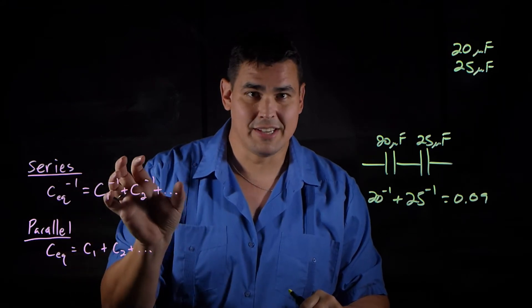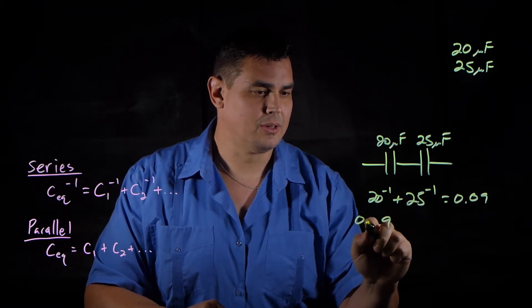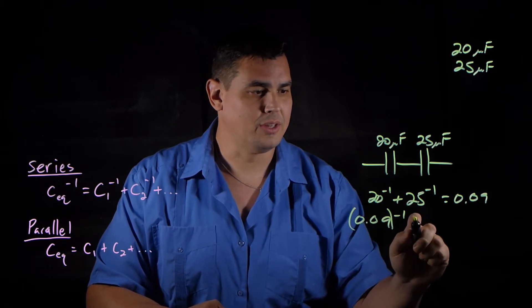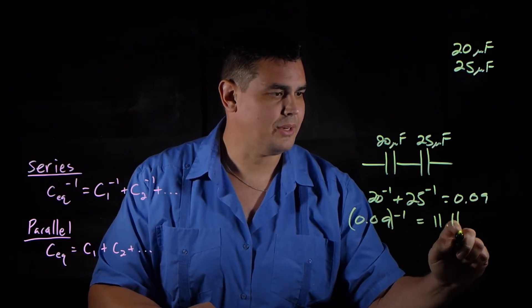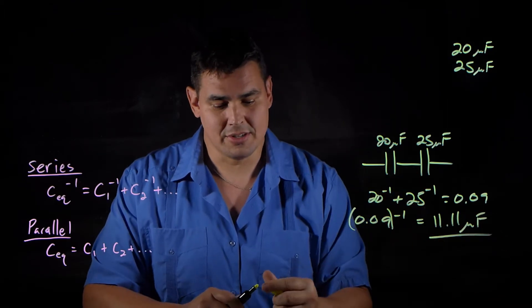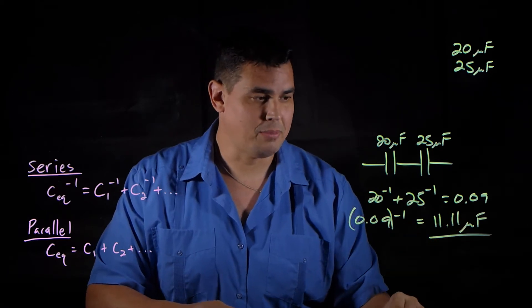So you still have to take the reciprocal again. So to get your final answer, you have to raise that to the minus 1, which in this case gives me 11.11 microfarads. So when I put these two in series, I get an equivalent capacitance of 11.11 microfarads.